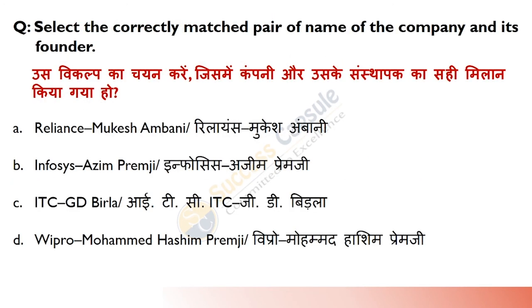Select the correctly matched pair of company and its founder. Answer is D — Wipro, founded by Muhammad Hashim Premji. The company was incorporated in 1945. Its original name was Western India Palm Refined Oil Limited, which later became Wipro.